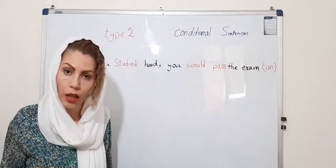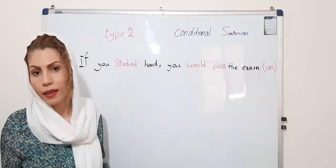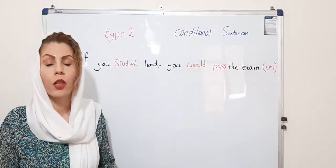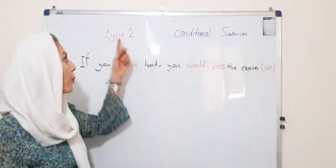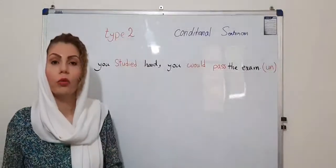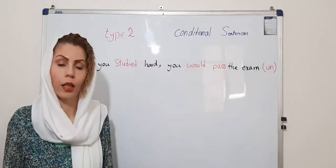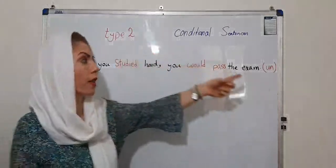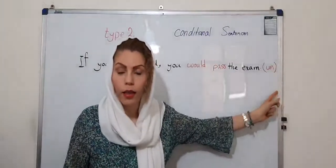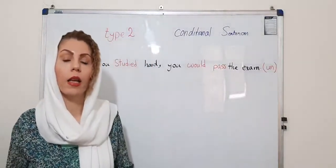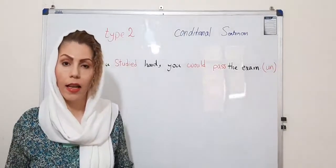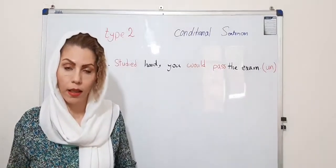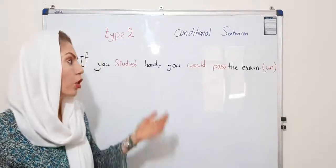So in type 2, you don't have enough time for doing the action, so type 2 is unreal. It means time has passed and you cannot compensate that.